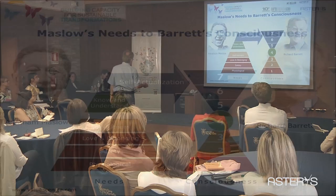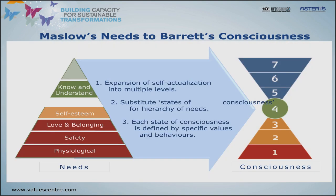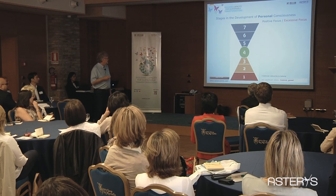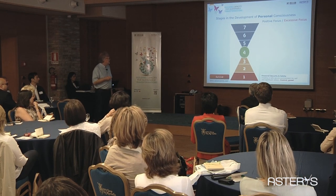I took these needs and translated them into consciousness. I expanded Maslow's self-actualization into three levels of consciousness, substituted hierarchy of needs for states of consciousness, and built this model. Out of this model, I created a tool — the seven levels of personal consciousness.